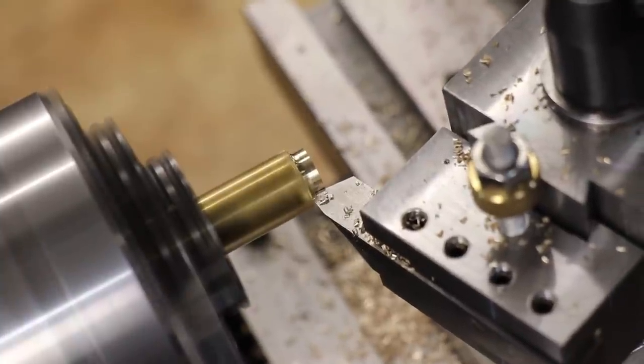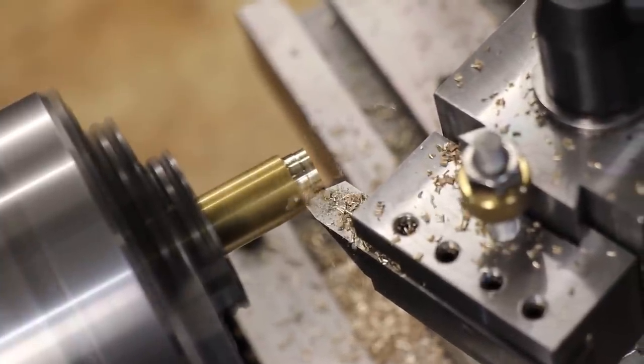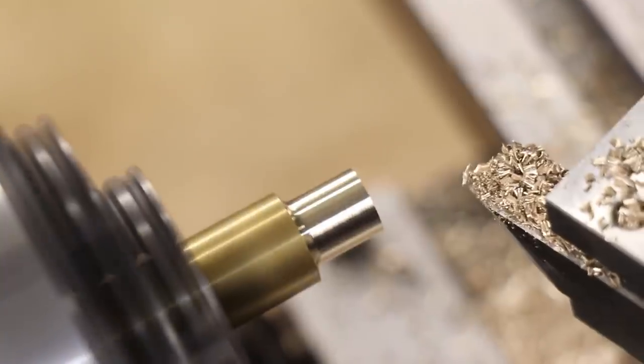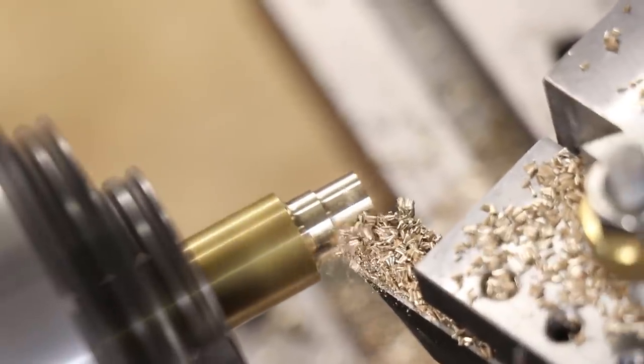Next, I'll make a brass thumb screw to lock the height adjustment ring. I always enjoy turning brass, but here it's pretty important since the brass won't mar the steel.